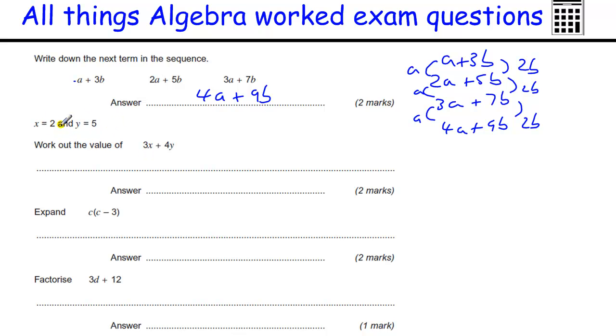Substitute values in again. So X is 2. So we've got 3 lots of 2 plus 4 lots of 5. We must work out these multiplications first. So we get 6 plus 20, which is 26.